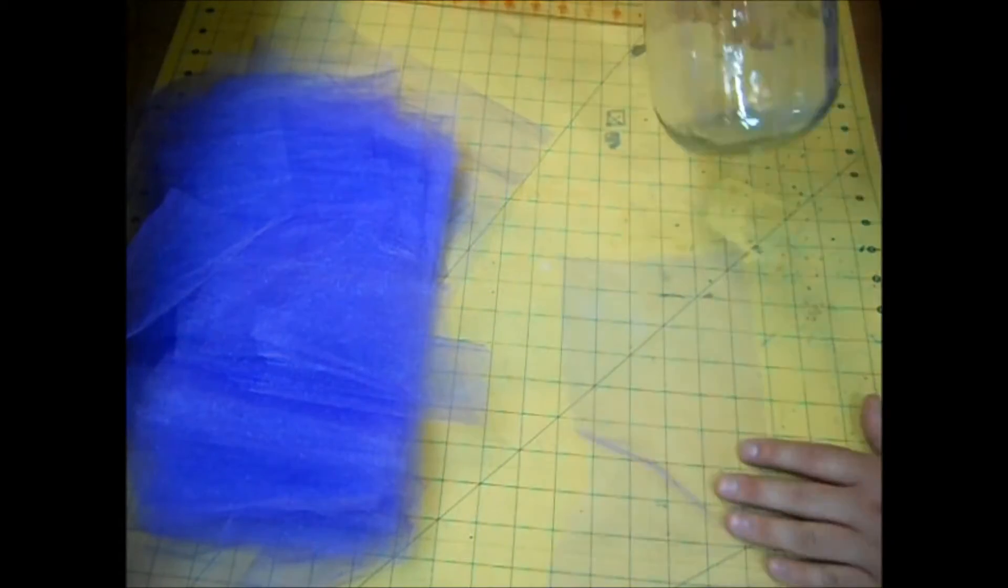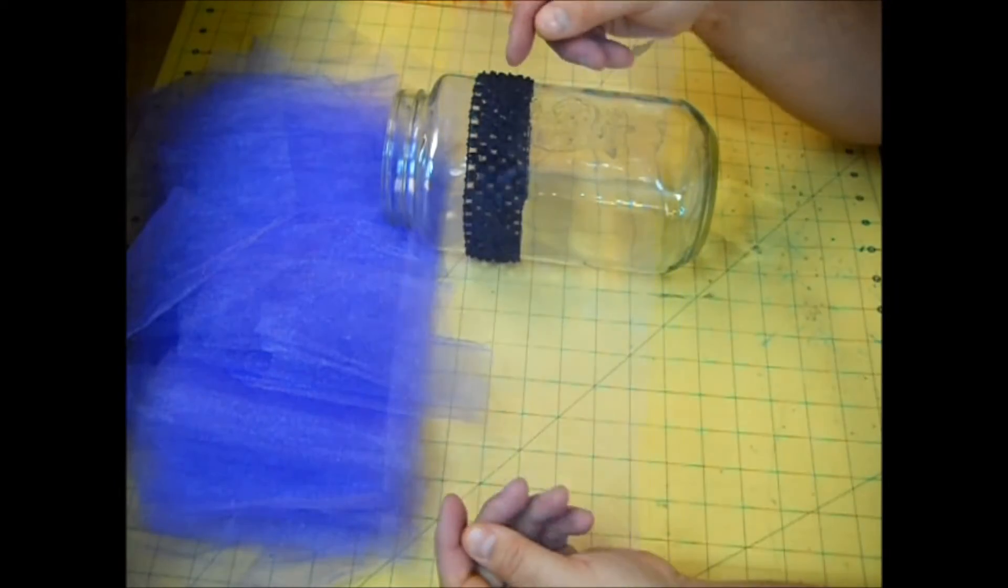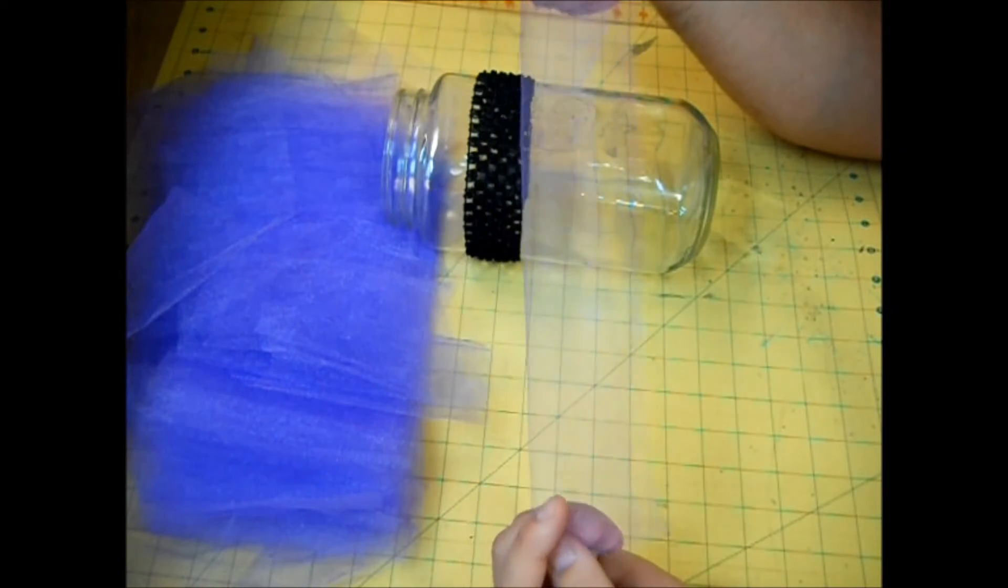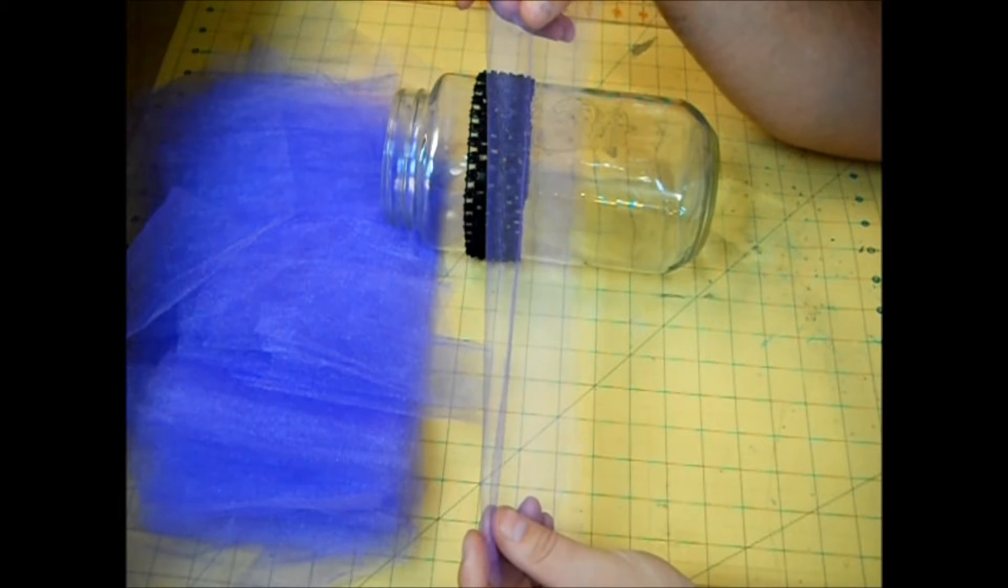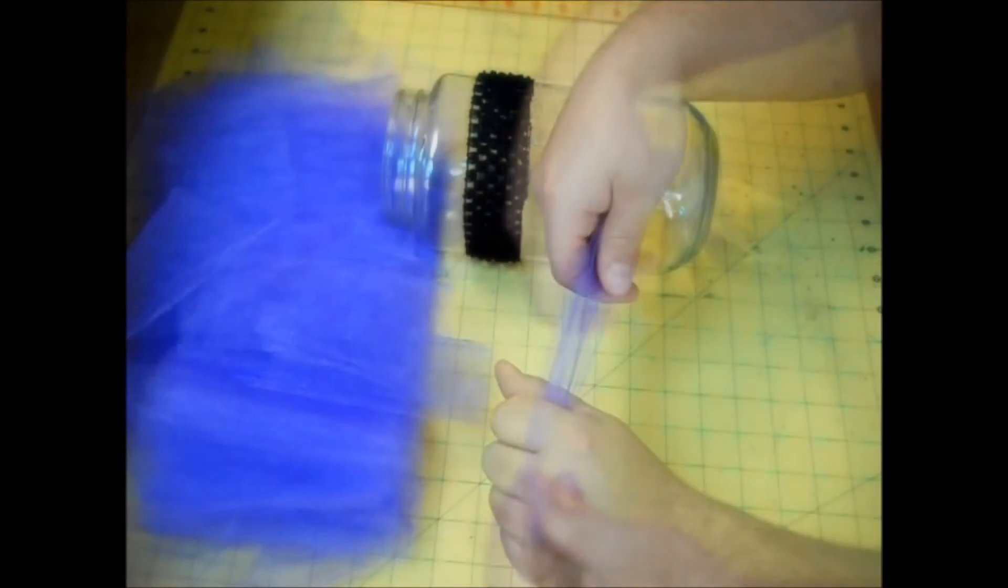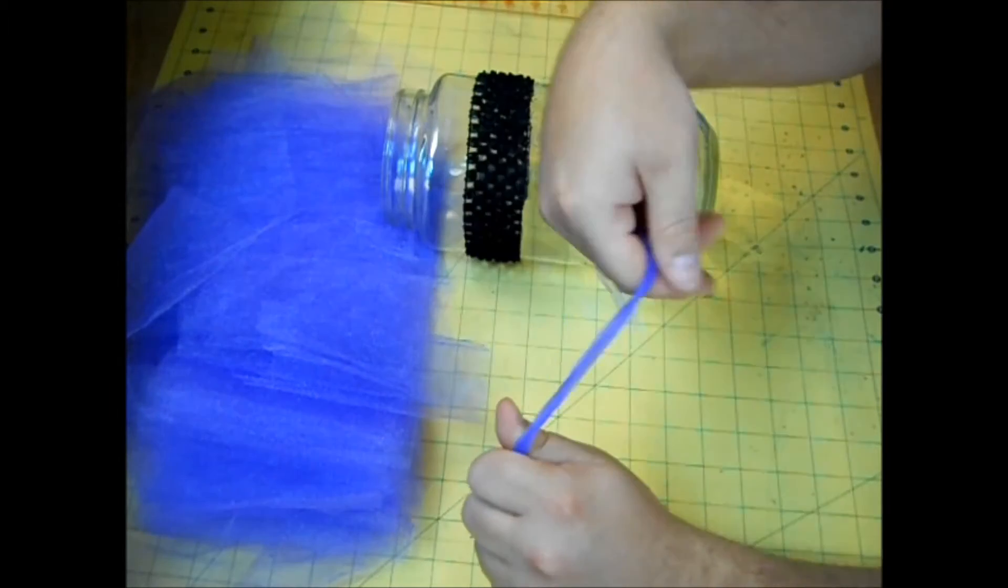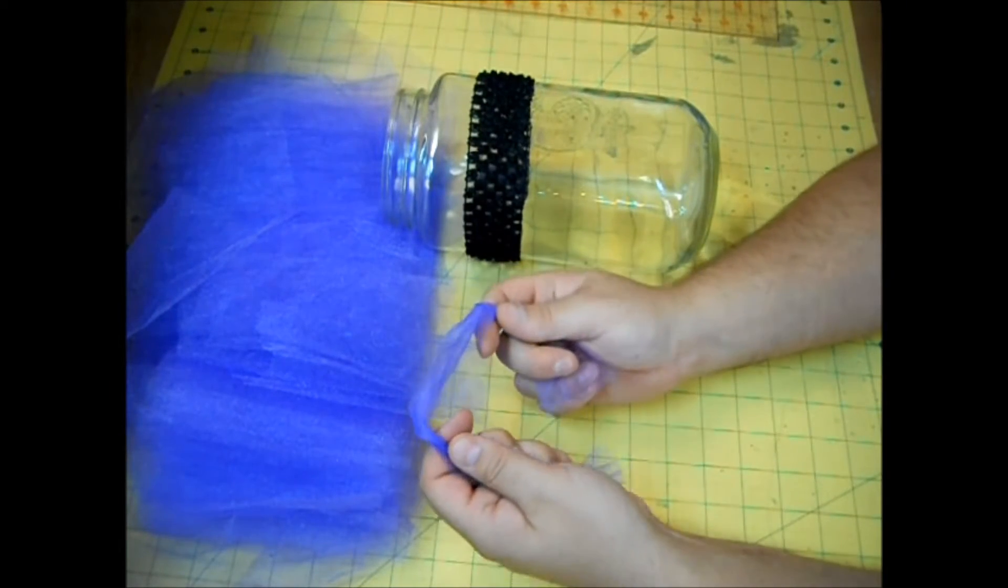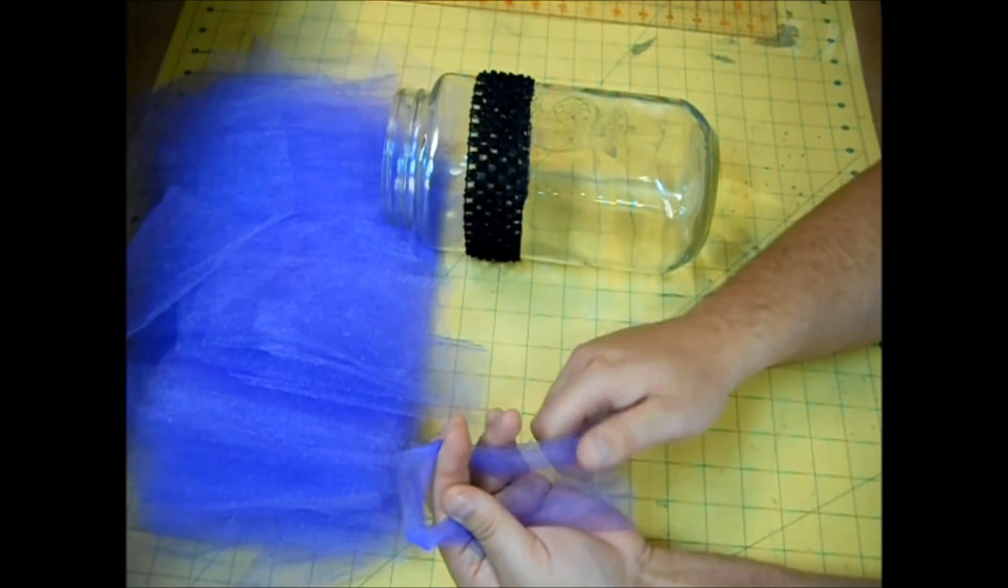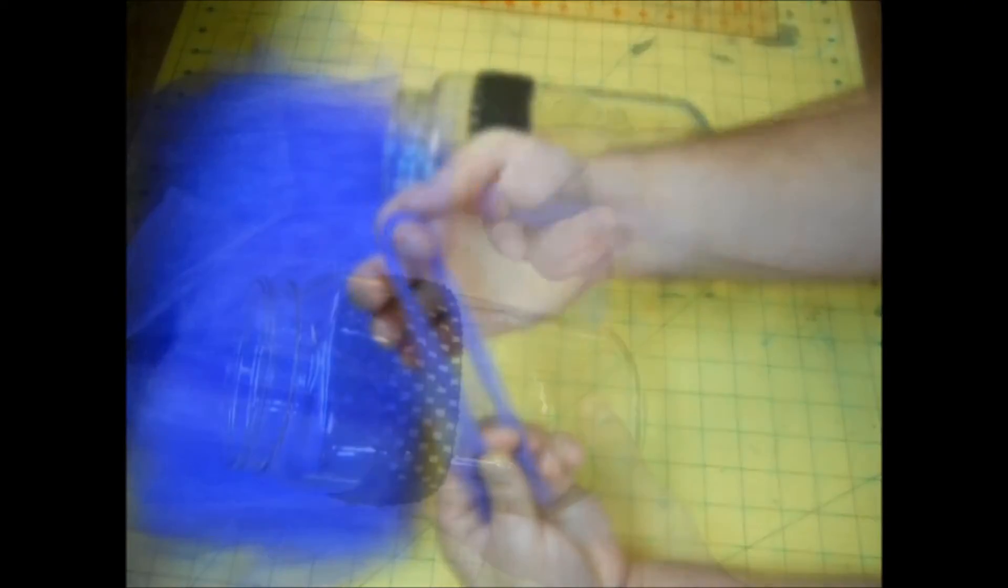You want to get your jar with your headband on it. And the first thing we're going to do is take one piece of tulle, and we're going to fold it in half the long way, or the hot dog way. And then I like to twist the tulle a little bit, and that just helps it go through a little easier. And now we're going to make a loop, if you can see that.